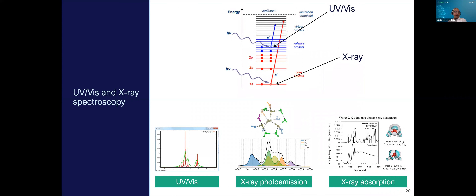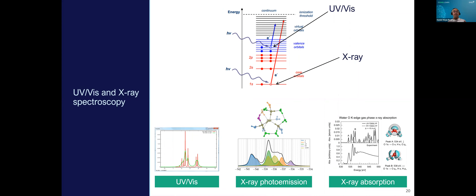I want to point out that 'proteins' appears just below 'properties,' in between 'density functional theory.' This is an important aspect we need to advertise more, because we can do protein chemistry, processes, and properties also with proteins in NWChem. Coming back to Amity's presentation, one of the main capabilities of NWChem regarding properties is that we can compute spectroscopies and relate them directly to experiment.